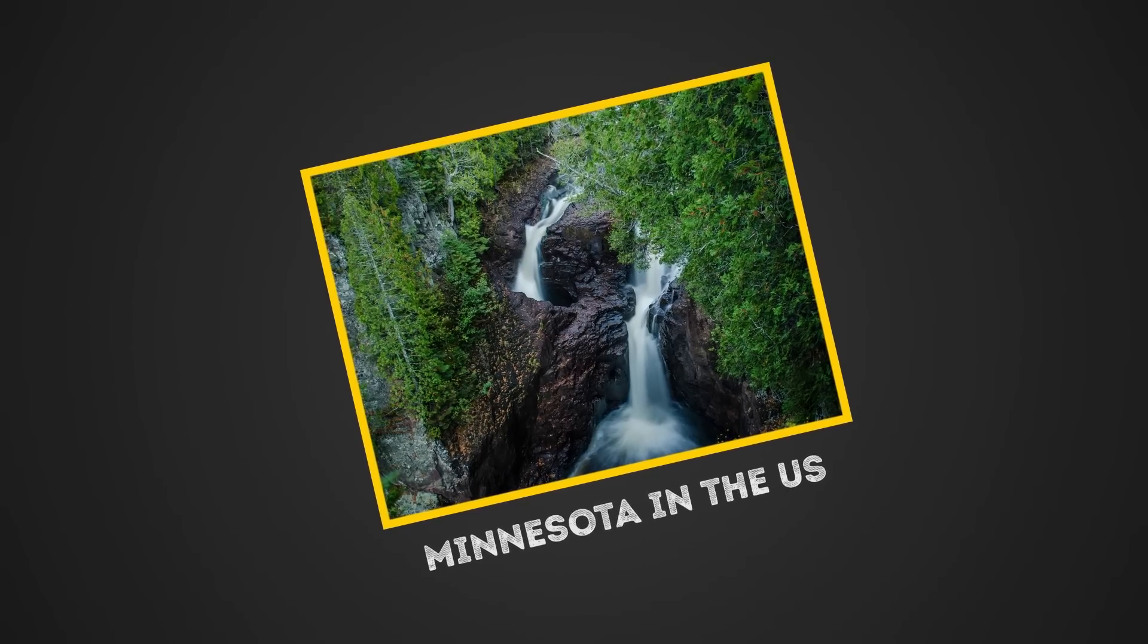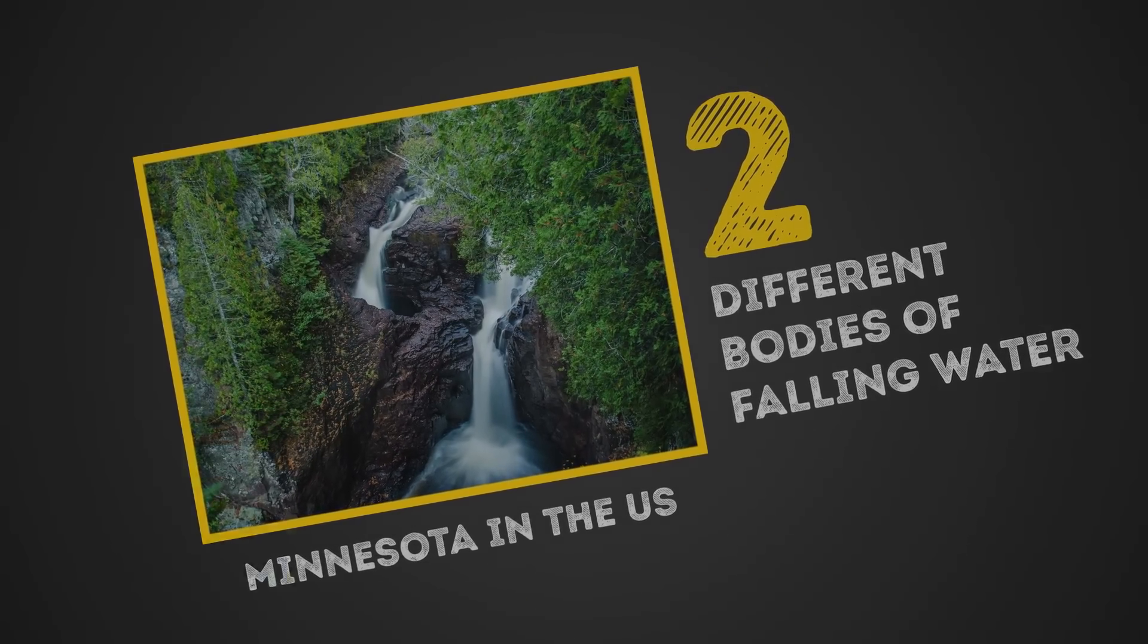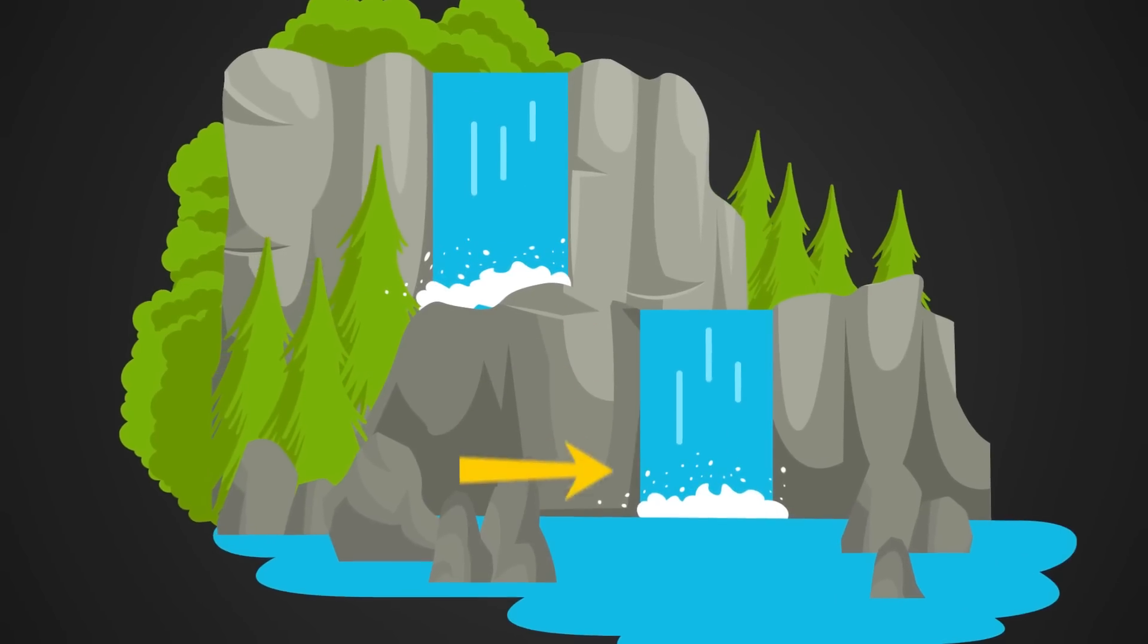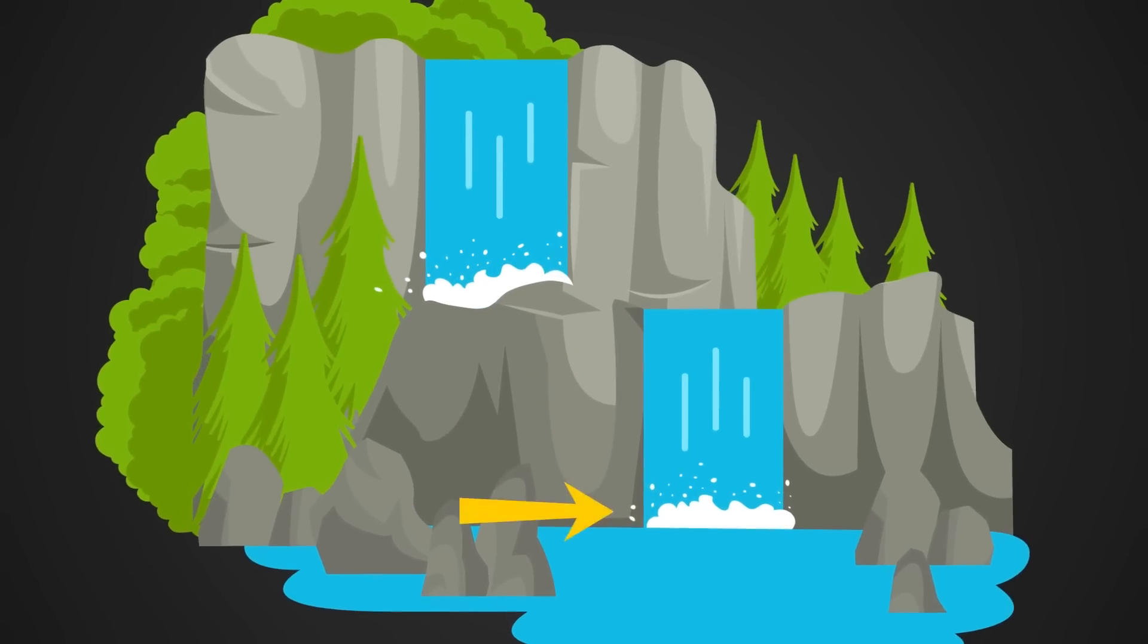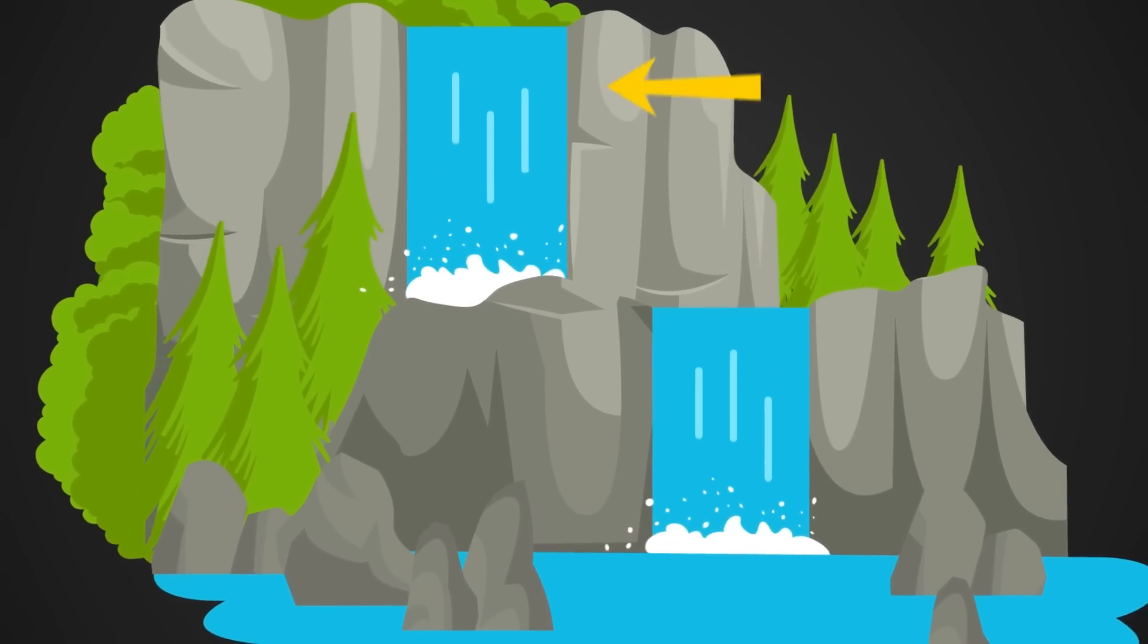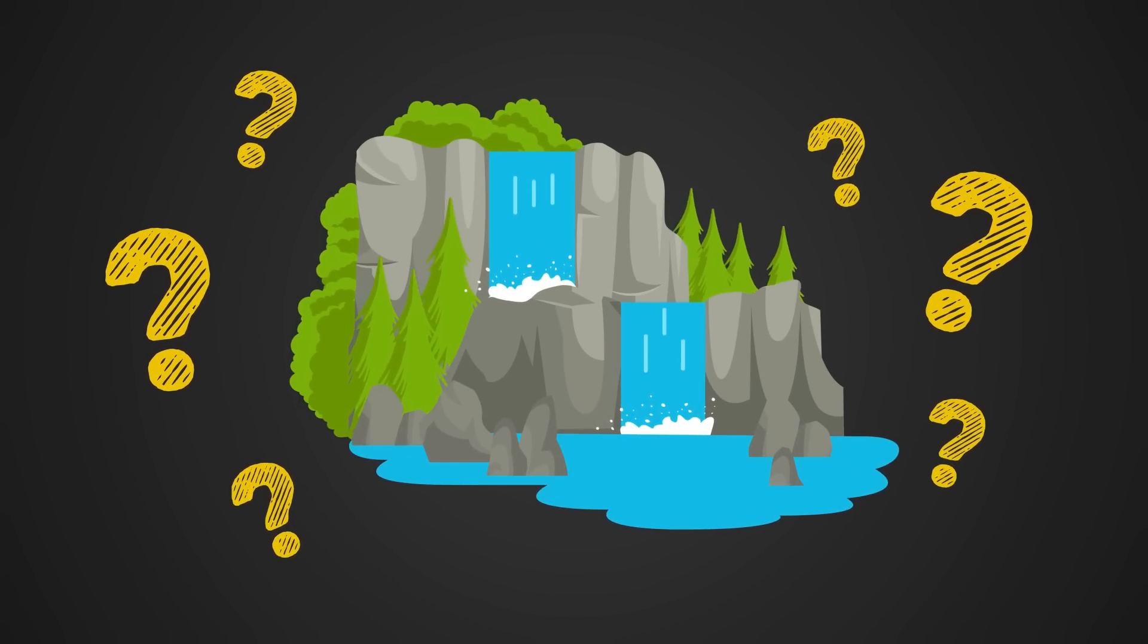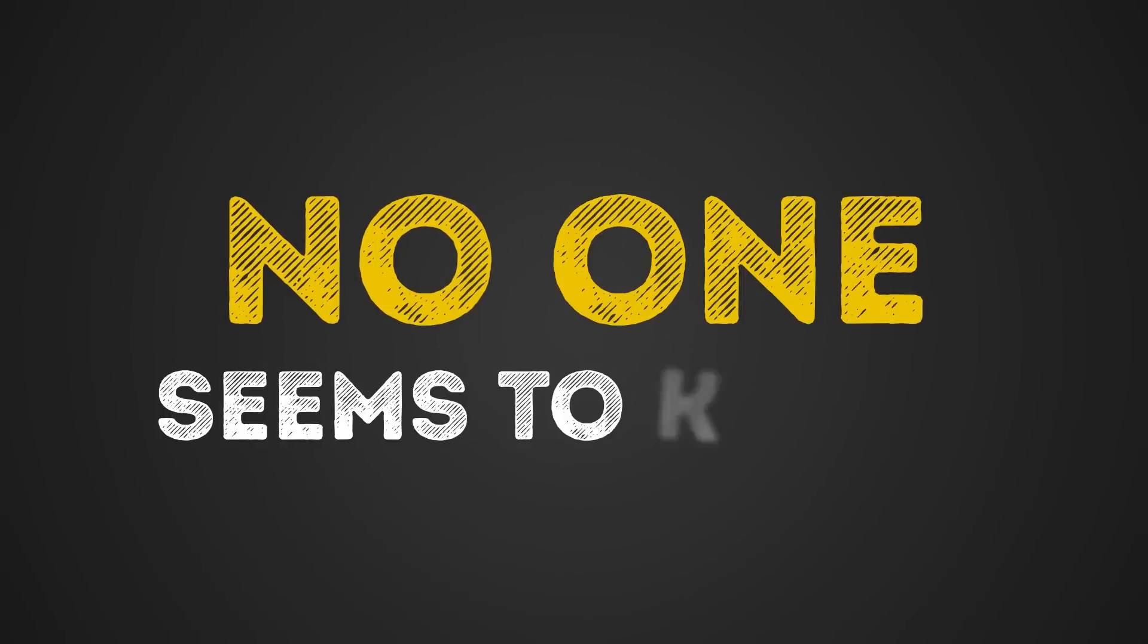What's interesting about this waterfall is that it has two different bodies of falling water. One side has water falling into another body of water, Lake Superior. The other one has water that falls straight into a huge, natural hole in the ground. Where does this water lead? Well, that's the mysterious part.